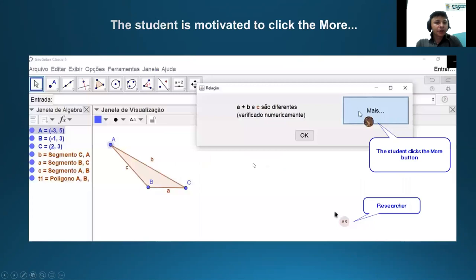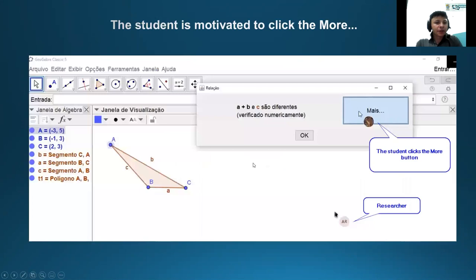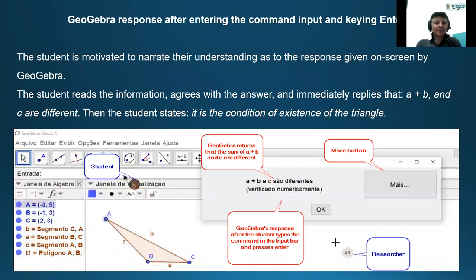Here, after the student explored and moved the polygon and reported their observations regarding the existence of the triangle, the research motivated them to insert in the input bar a new command that enables the automatic return as to the condition of existence of the triangle. In this case, I point out the specific command Relation A plus B comma BC. This is sufficient for GeoGebra to show information about the construction. This information is about the proof of the demonstration of the object constructed.